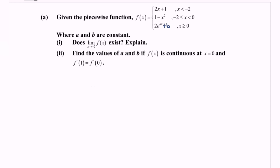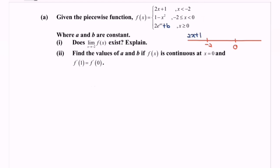Given the piecewise function, my suggestion is to express the situation on a number line. Locate the values at negative 2 and 0. Focus on X less than negative 2, where we have the function 2X plus 1, followed by 1 minus X squared including negative 2. The third piece is 2 multiplied with exponent AX plus B, including 0.